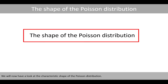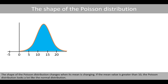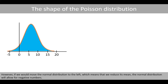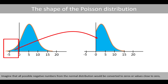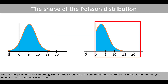We'll now have a look at the characteristic shape of the Poisson distribution. The shape changes when its mean changes. If the mean value is greater than 10, the Poisson distribution looks a lot like the normal distribution. However, if we reduce the mean, the normal distribution would allow for negative numbers. Since the Poisson distribution cannot have negative numbers, its shape starts to change as the mean gets closer to zero. Imagine all possible negative numbers from the normal distribution would be converted to zeros or values close to zero — then the shape would look something like this. The shape of the Poisson distribution therefore becomes skewed to the right when its mean gets closer to zero.